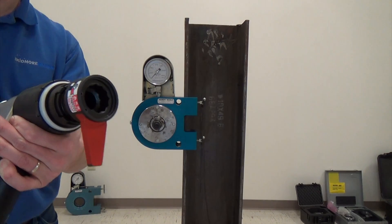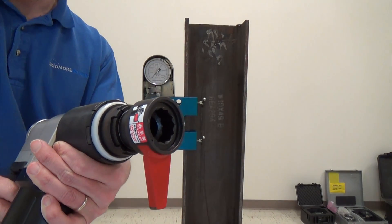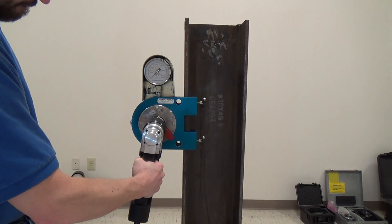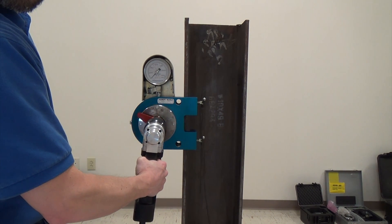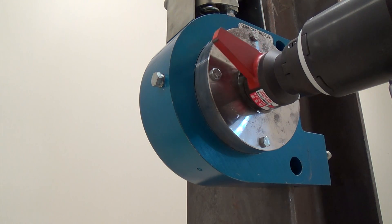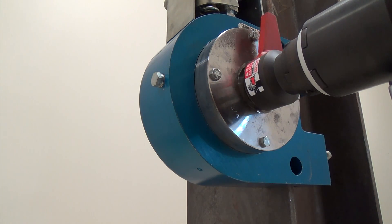The turn of nut gun utilizes a reaction arm to efficiently create the torque needed to tighten fasteners. This is important to note when testing in a Skidmore because tools that use a reaction arm need additional testing equipment, referred to as torque reaction kits. As you can see, without anything to react against, the tool will not function.